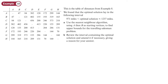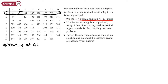Example ten uses the table of distances from example eight, where we found that the optimal solution lay in a certain interval. Use the nearest neighbor algorithm using A, then B as starting vertices to find upper bounds for the Travelling Salesman Problem. Starting at A: we circle row A, put step one above column A, and look for the lowest weight in column A. That's 47, so we move on to column B. The lowest weight in B is 121, so we move on to column C.